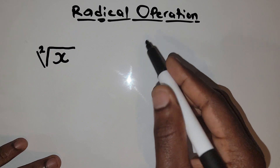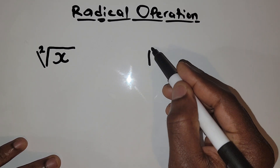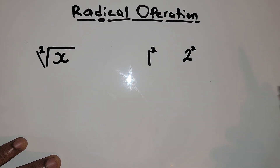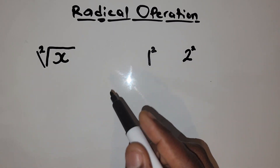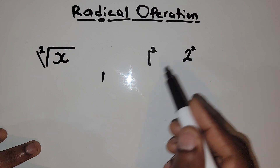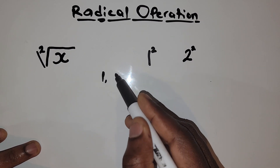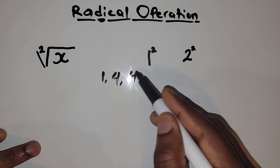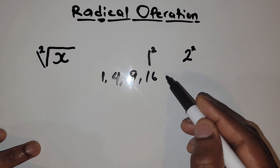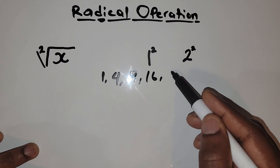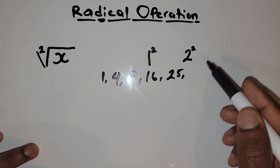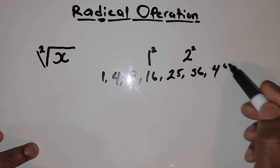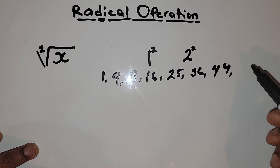When I talk about perfect squares, I'll talk about something like this. The square root of 1 is 1, because 1 times 1 is 1. 2 times 2 is 4. The square root of 3 is 9. The square root of 4 is 16. The square root of 5 is 25. The square root of 6 is 36. The square root of 7 is 49. The square root of 8 is 64.